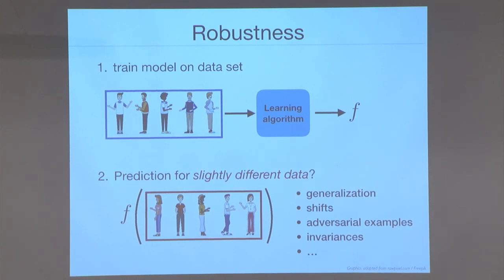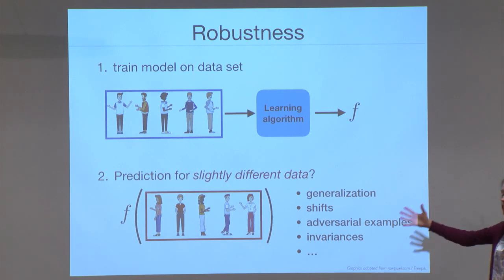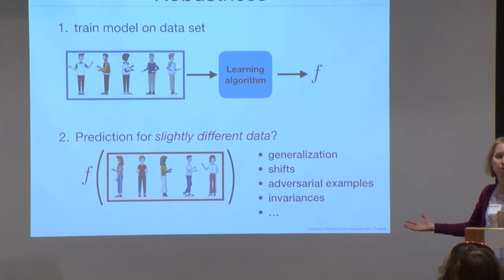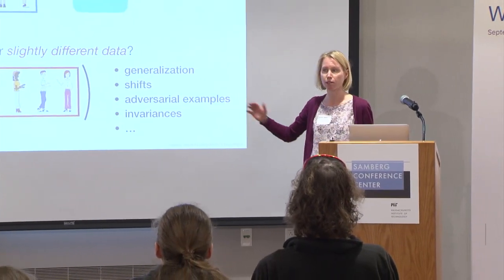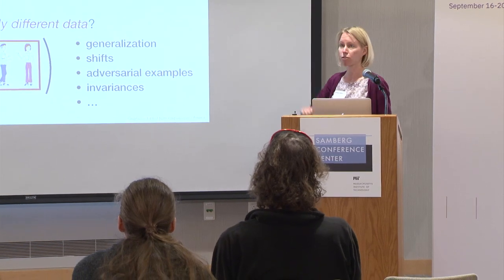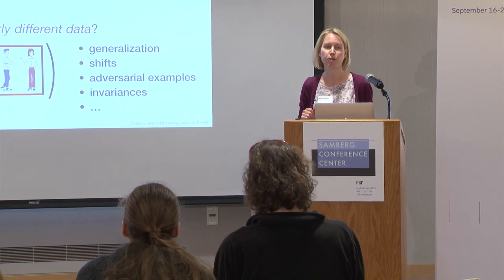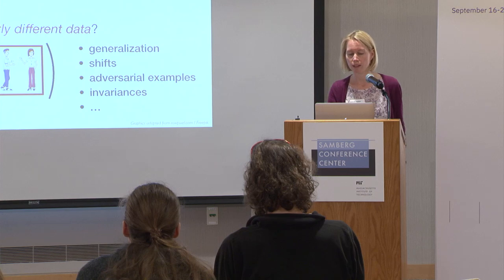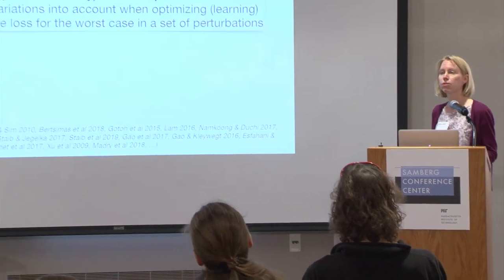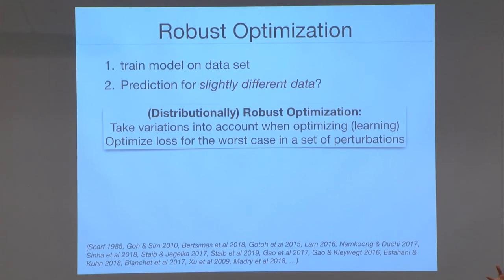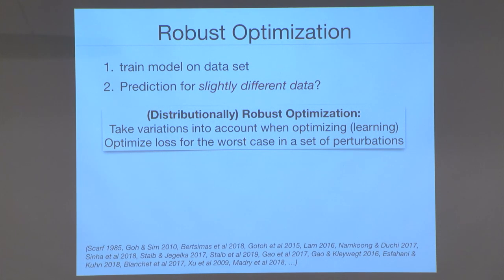The idea I want to introduce is robust optimization. Robust optimization follows the idea that we have slight perturbations of the data — so why not take that into account during learning, i.e., during optimization? Learning is nothing else than optimization: minimizing empirical loss and finding the best function f that fits the data. So why not take those perturbations into account during the learning process?